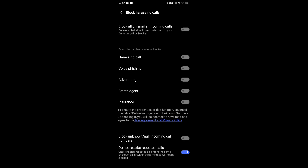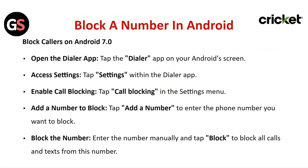Add a new number to block. Tap add a new number to enter the phone number you want to block. Enter the number manually and tap on block to block all calls and texts from this number.